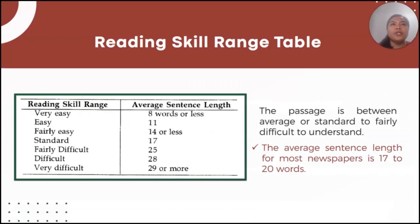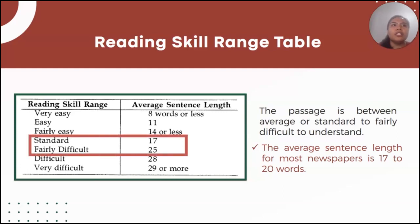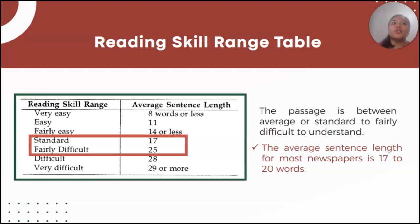Now we are going to determine the readability of the passage based on the average sentence length. Since 20.8 fell under the standard to fairly difficult range, we can say that the passage is between average or standard to fairly difficult to understand. Please take note that the average sentence length for most newspapers is 17 to 20 words.